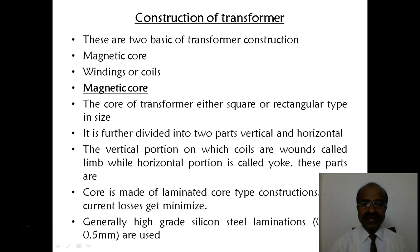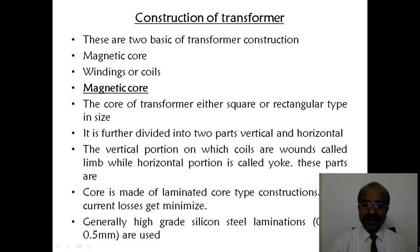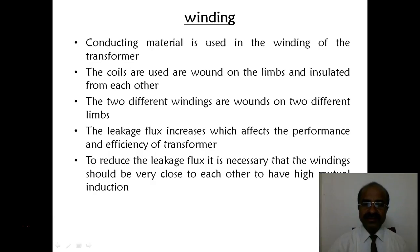The construction of a transformer is made of mainly two parts: one is the magnetic core, and the other is the windings — the coils. The magnetic core is either square or rectangular shaped. The core is made of laminated construction, or laminated plates, to reduce the eddy current loss. It is made of high grade silicon steel to reduce the hysteresis losses. The winding is made of copper.